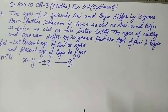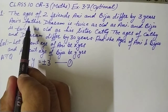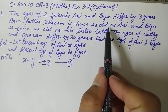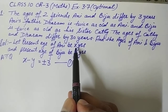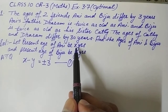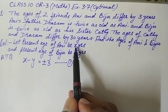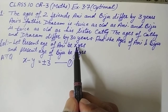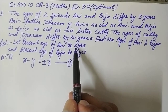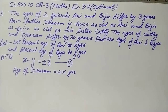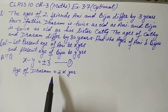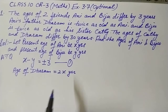The next line states Ani's father Dharam is twice as old as Ani. Ani's age is X years, so his father's age will be two X. Therefore, the present age of Dharam is equal to two X years.